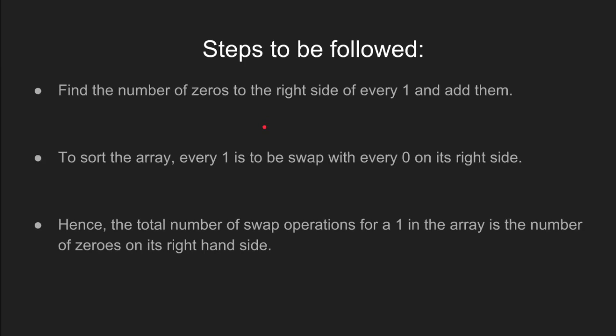The problem statement is that given a binary array, the task is to sort this binary array. This can be done by finding the number of zeros to the right-hand side of every one and adding them all.